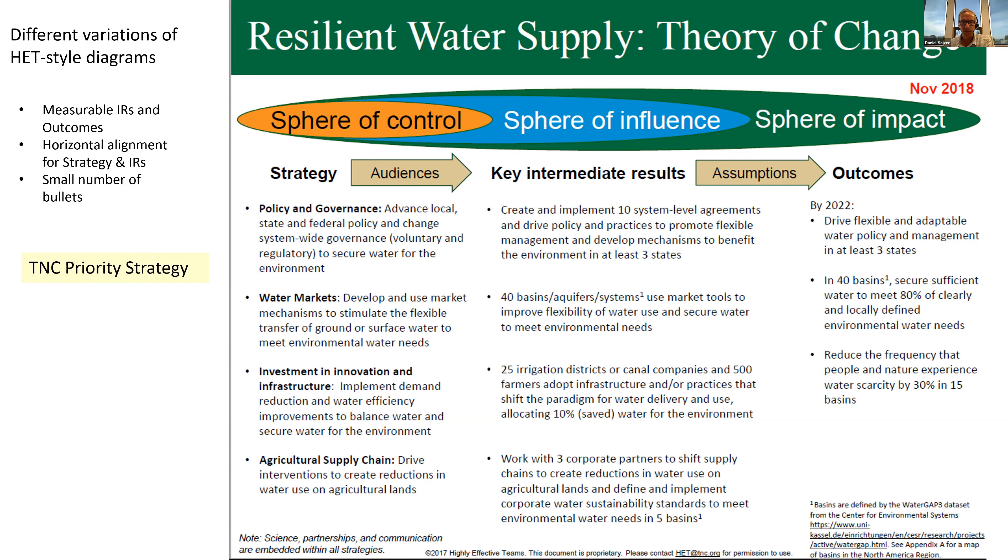This specific example is one of our priority strategies. The result statements are smart—they're written in clear and measurable ways. It's nice that you can read across the left and middle columns and see the alignment. The connections to the outcomes isn't quite as clear in this case.